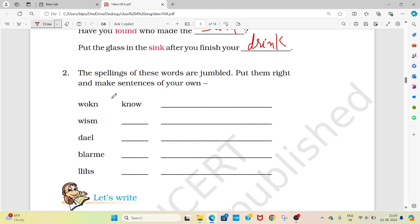Now come to the next question. The spellings of these words are jumbled, put them right and make sentences of your own. Like W-O-K-N, so what do you have to make from this? Put them and make sentences. Like here I can write, I know swimming.